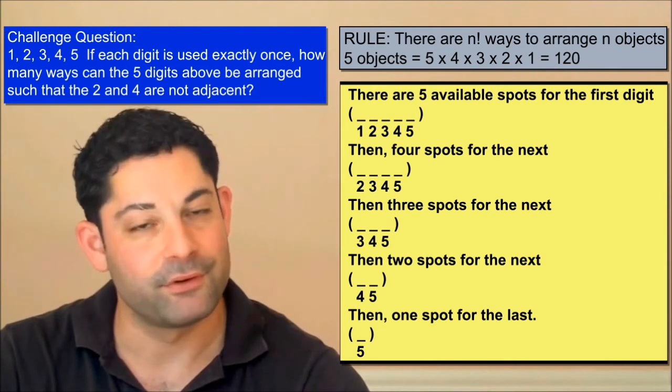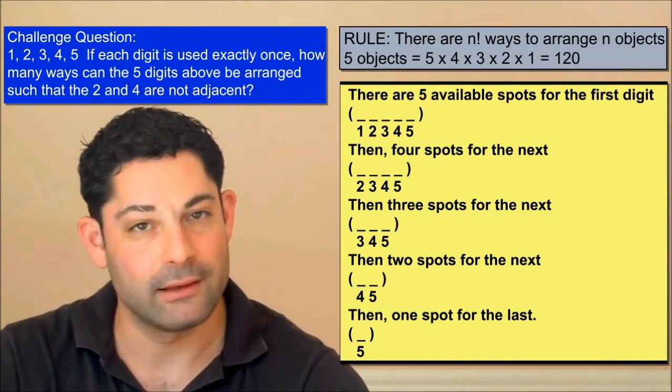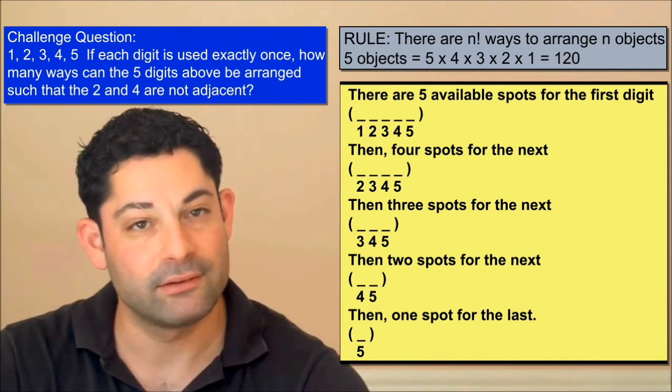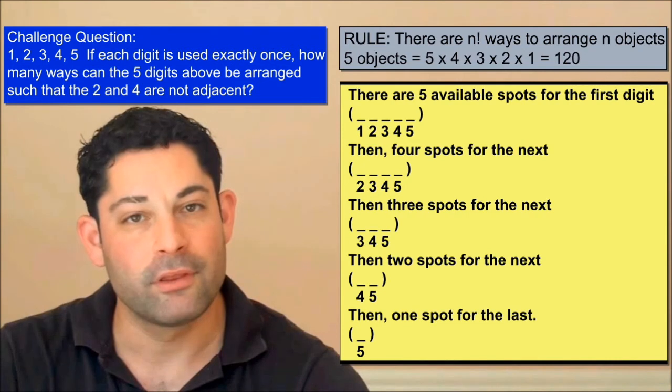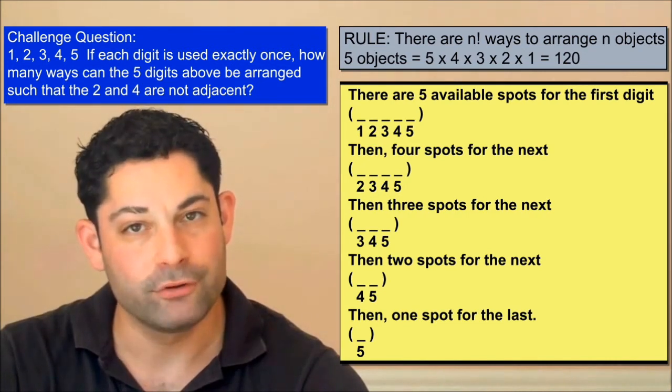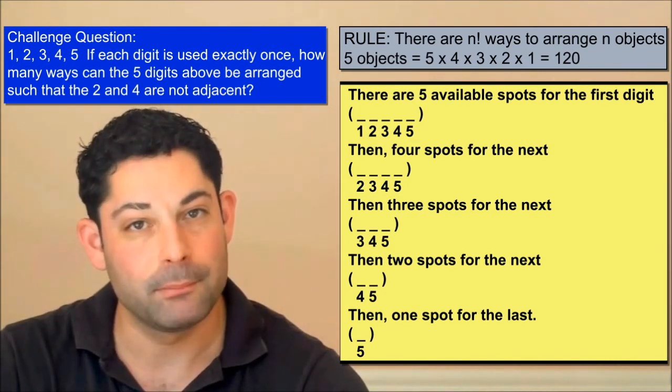There are five available spots for the first digit, four for the next, three for the next, two for the next, and one available spot for the last digit. So there are five factorial, or 120 ways in which five objects can be arranged.